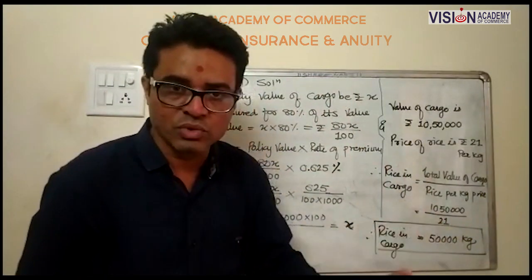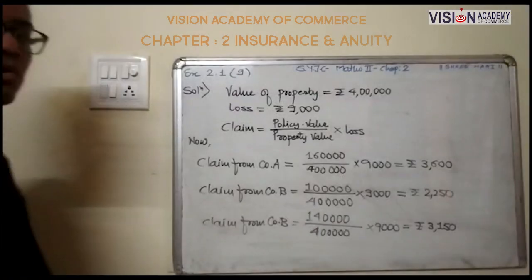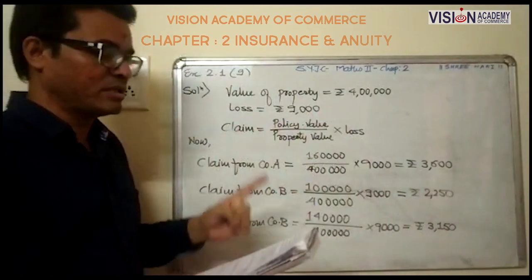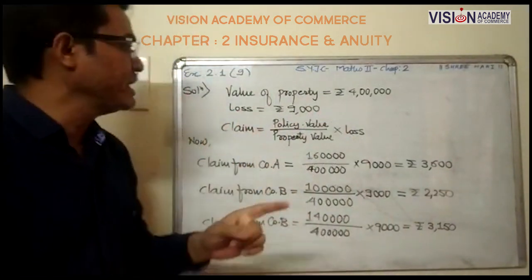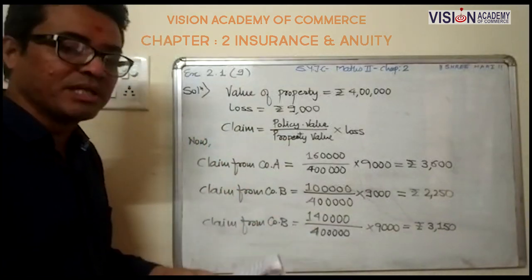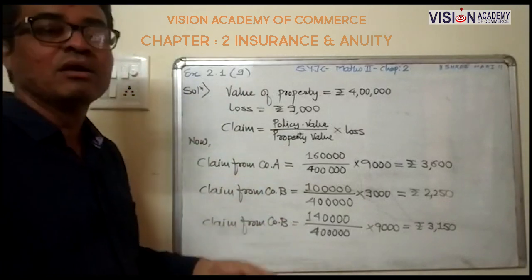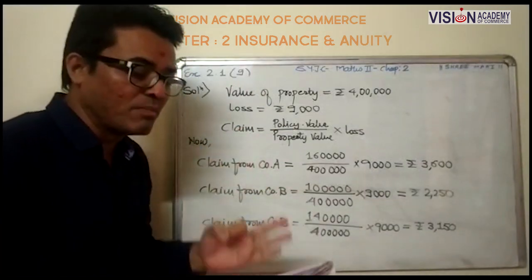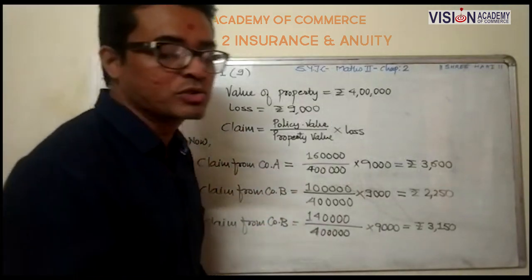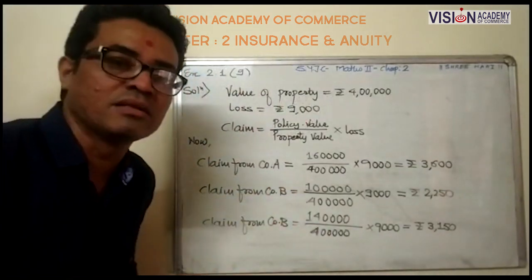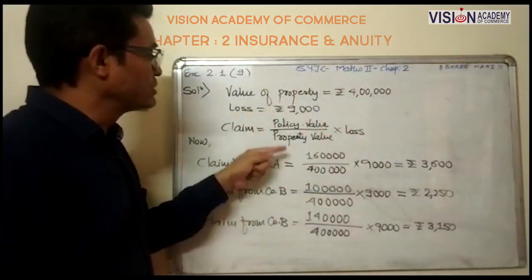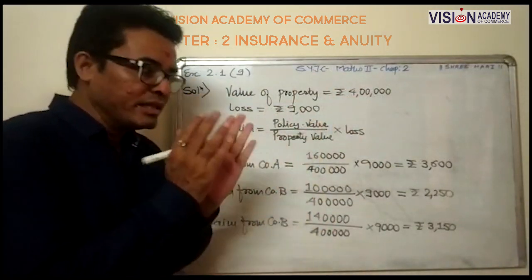Now question number 9: A property worth rupees 4 lakhs is insured with three companies A, B, and C. The amounts insured with these companies are 1 lakh 60 thousand, 1 lakh, and 1 lakh 40 thousand. Find the amount recoverable from each company in the event of a loss of rupees 9,000. In this question, property value is rupees 4 lakhs and loss is rupees 9,000.